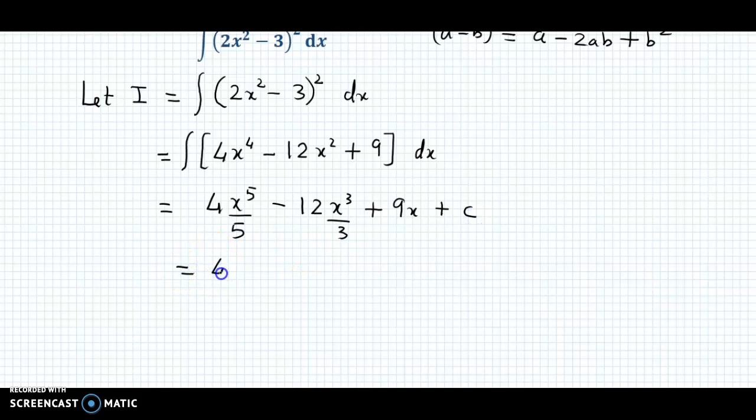Now if we further simplify, we have a final answer as (4/5)x⁵ minus 3 times 1 is 3, 3 times 4 is 12. So here we have -4x³ + 9x + c. So this is the required integral value.